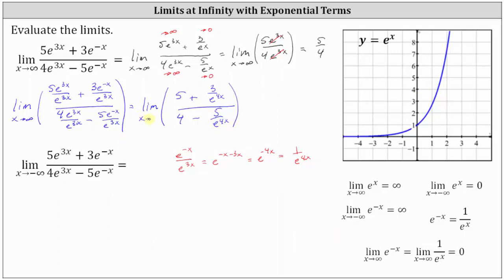As x approaches infinity, 5 is not affected. 3 divided by e to the power of 4x approaches 0. In the denominator, 4 is not affected, and 5 divided by e to the power of 4x approaches 0. The numerator approaches 5 and the denominator approaches 4, so the limit is equal to 5 fourths. Either method is valid for determining this limit.